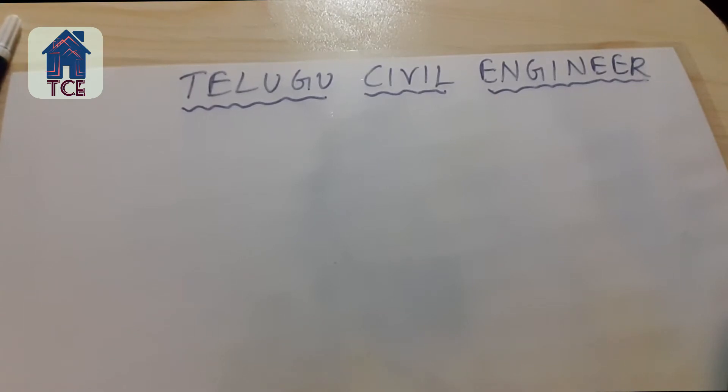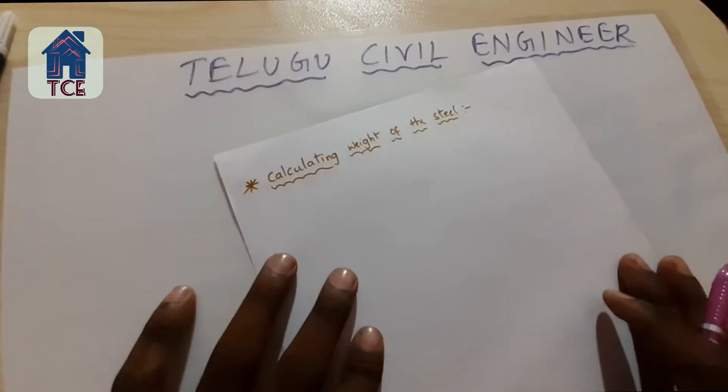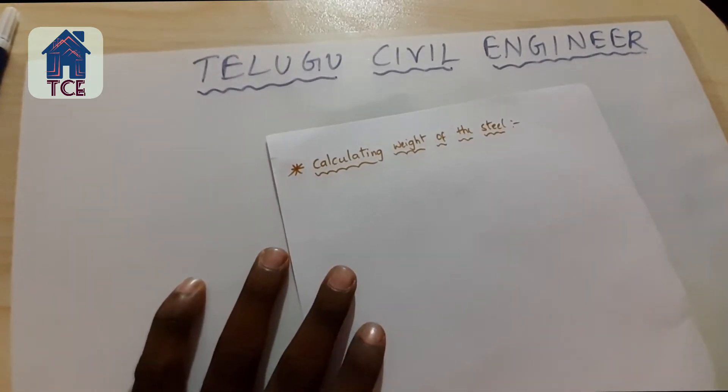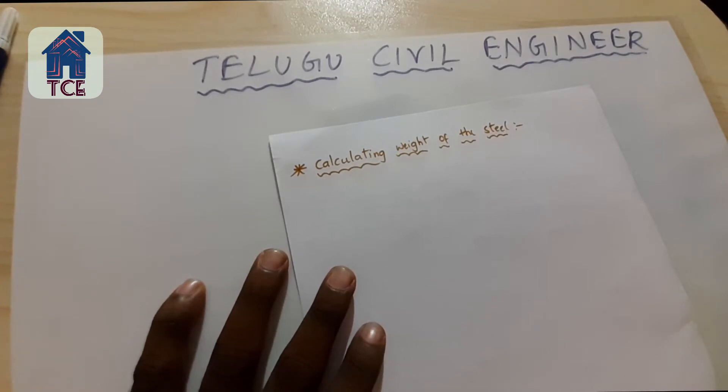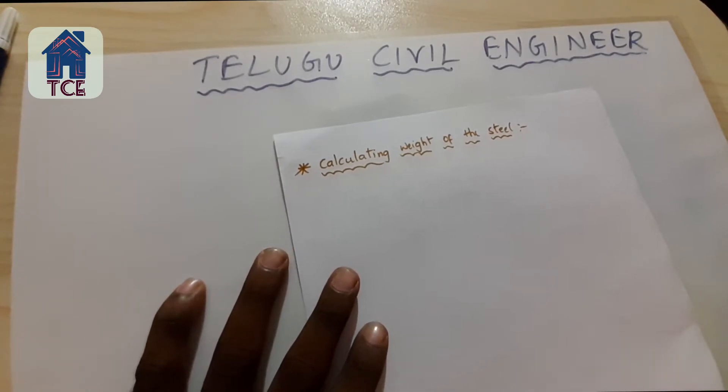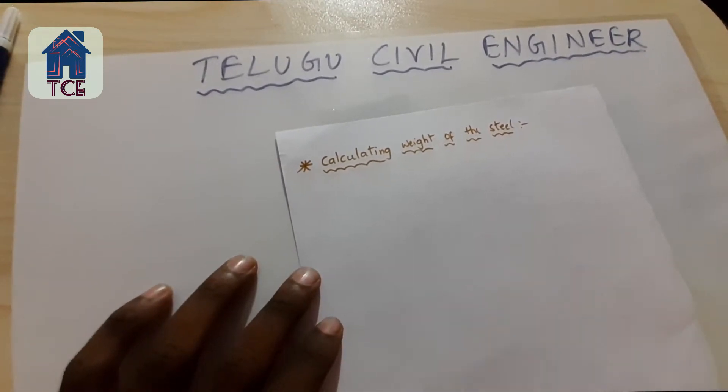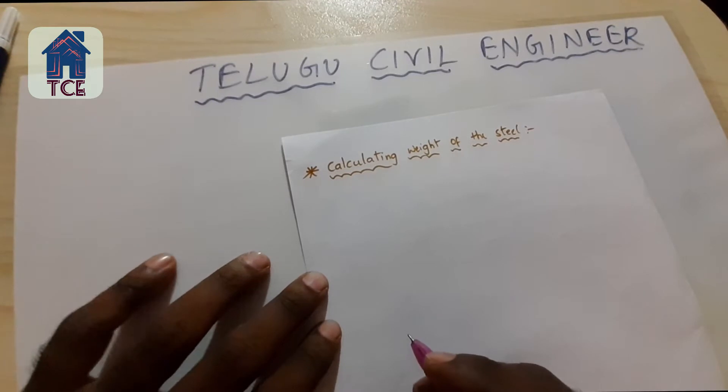In this class, calculating weight of steel. In the last class, we found the weight of 8mm, 6mm, 4mm, 12mm and maximum diameter. So we found the formula.